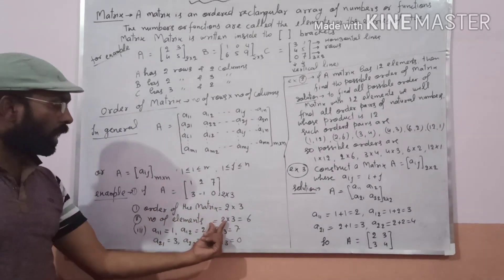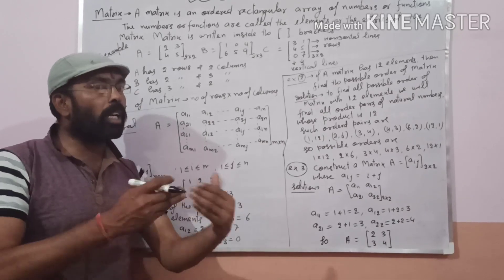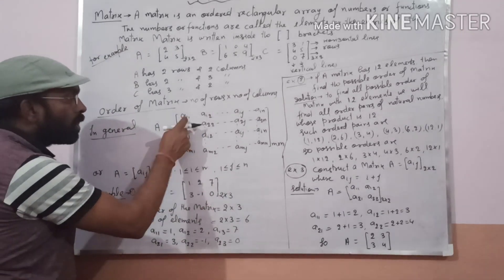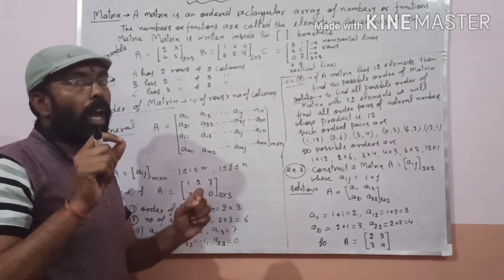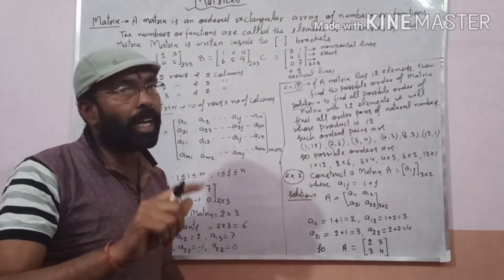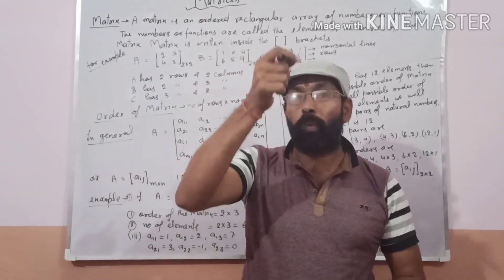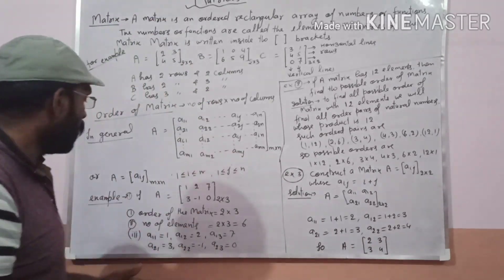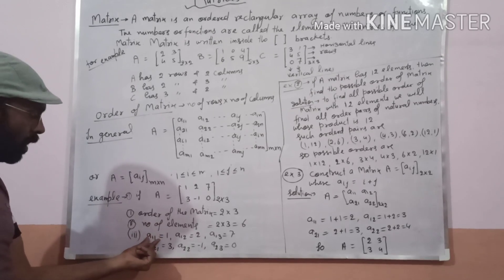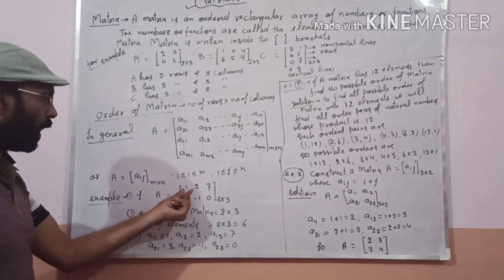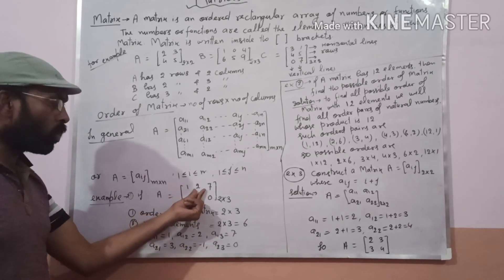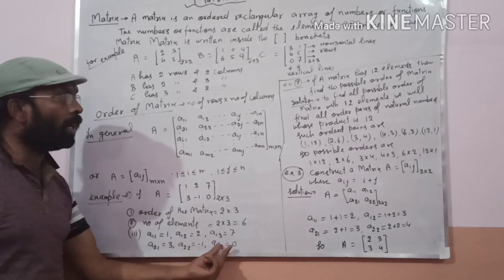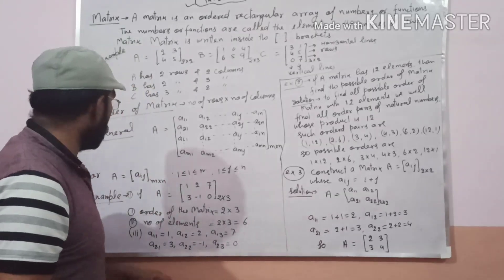The number of elements in the matrix is 2 by 3, that is equal to 6. A11 means the element of the first row and first column, which equals 1. A12 is first row, second column, equals 2. A13 is first row, third column, equals 7. Similarly we can find A21, A22, and A23.